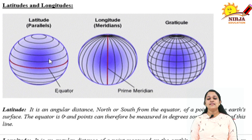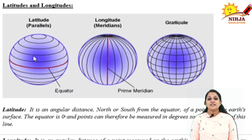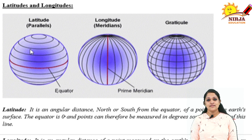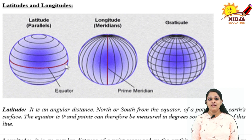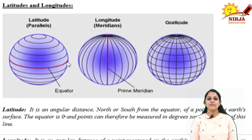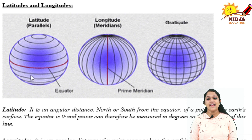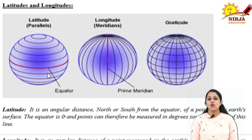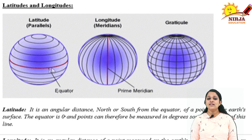Now you can see latitude and longitude lines. Latitude lines are the horizontal lines — they run from east to west. This line here is the equator, marked at 0 degree. The equator is the horizontal line that divides the globe into the northern hemisphere and southern hemisphere. These lines are called latitudes, and the equator is the main latitude line marked at 0 degree.